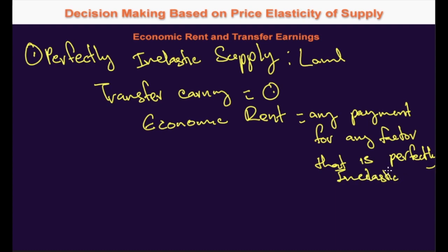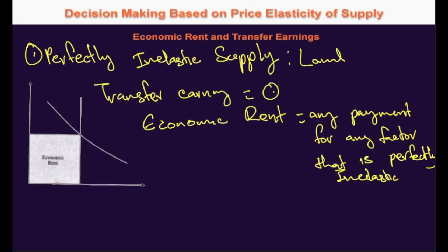To put it graphically: on a price-quantity diagram, the supply curve is a vertical line because for perfectly inelastic supply, any price change does not change the supply — it is fixed. The demand curve intersects this vertical supply curve, determining the price paid at equilibrium. Any payment made for land is economic rent, because you don't need to pay any minimum amount for it to be available for production.